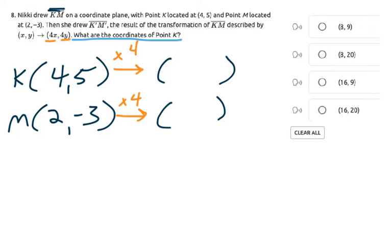Well, we're multiplying by 4, so you're going to multiply them both by 4. 4 times 4 here is 16, and 5 times 4 here is 20. So point K' is (16, 20). That's point D. That's the answer.